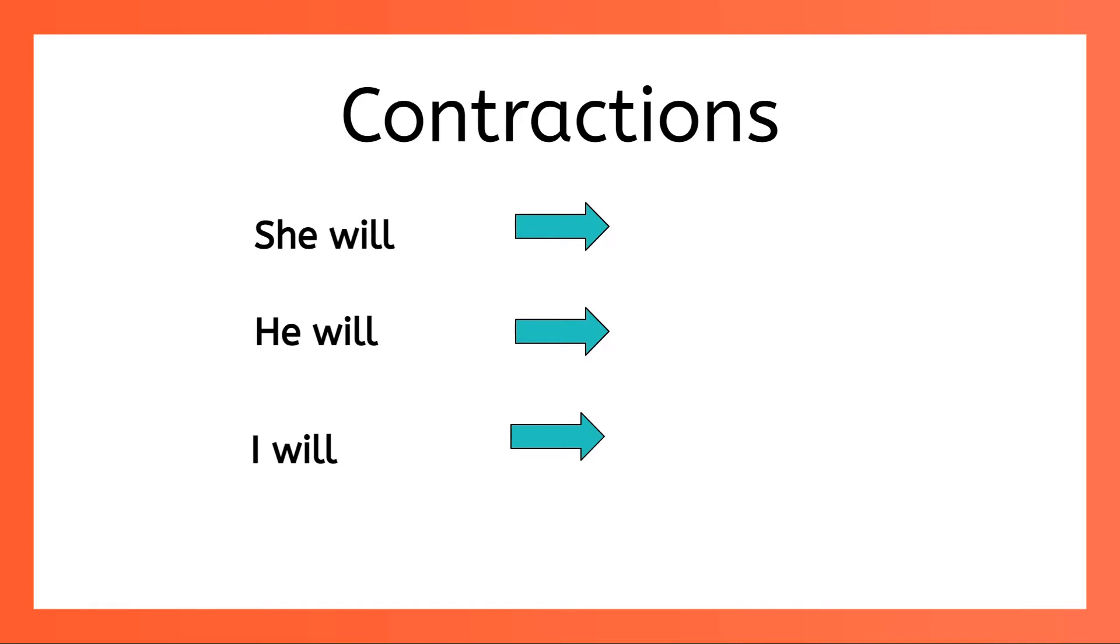Let's take a look at some examples of contractions. We often make contractions using the word will. Instead of she will, we often say she'll, and instead of he will, we'll say he'll, and the contraction for I will is I'll. Do you see the apostrophe in those contractions? It's showing you where some letters are missing.